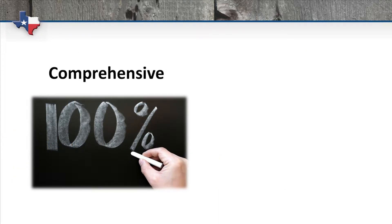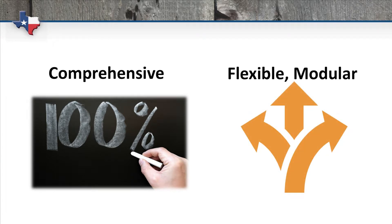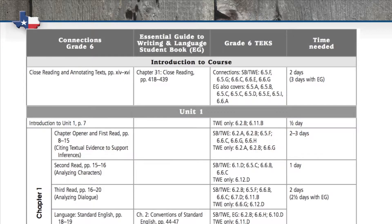While you can absolutely use Connections as a single comprehensive resource, we know that very few teachers use a textbook or basal resource from page 1 to page 400. So Connections is designed in such a way that it can be used modularly, and you can pull out the components of any chapter to be used as standalone lessons. Comprehensive yet flexible to adapt to any district's curriculum.